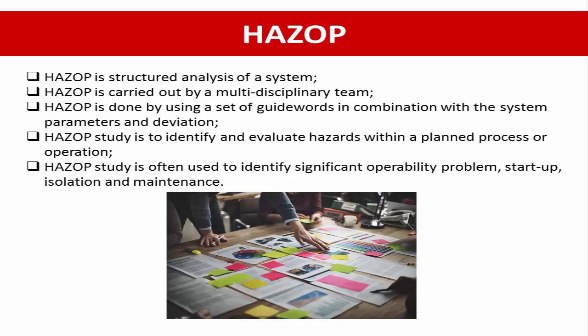The team includes the process engineer, instrument engineer, piping engineer, etc. The primary purpose of the HACCP study is to identify and evaluate the hazard within the planned process or in the operation. The hazard may have several impacts, including the impact to the people, impact to the property, environment, or social.